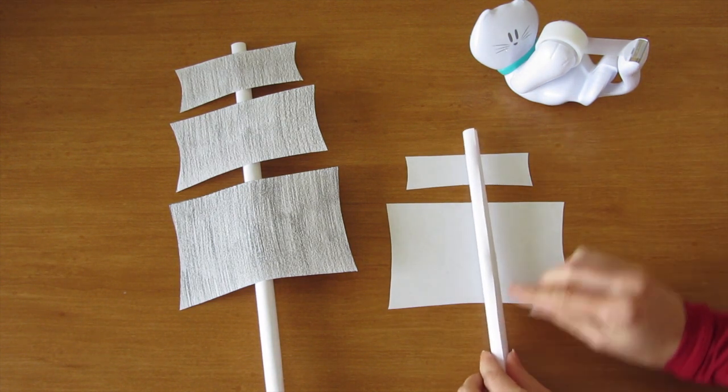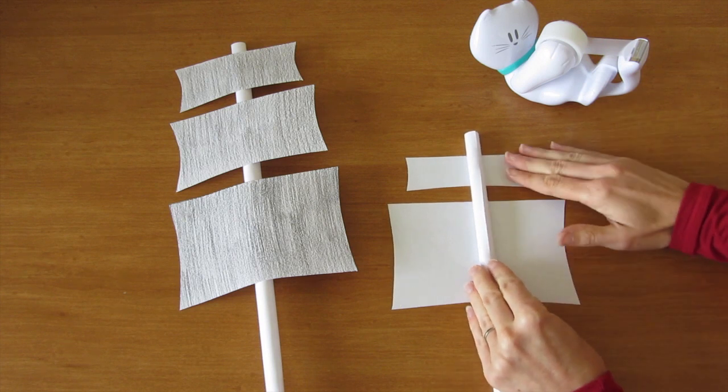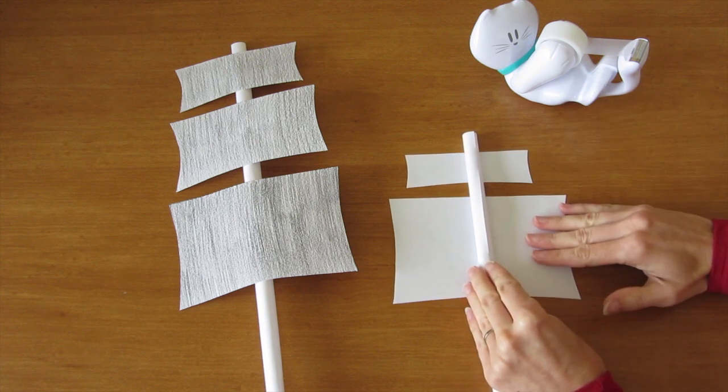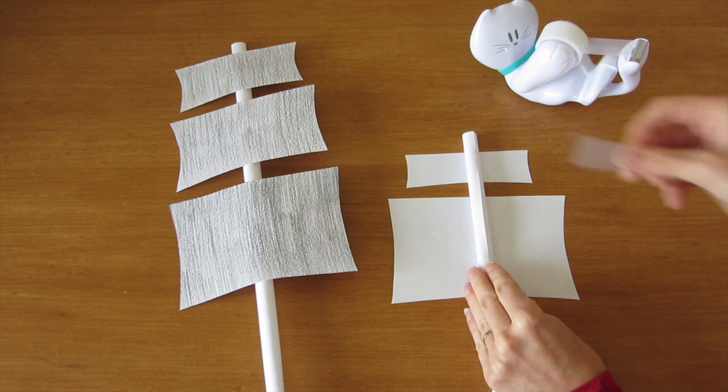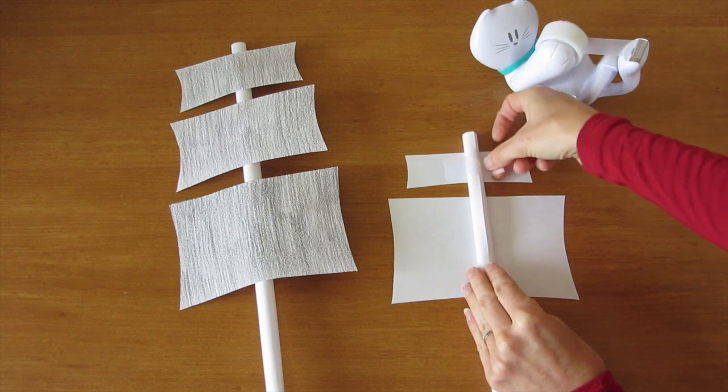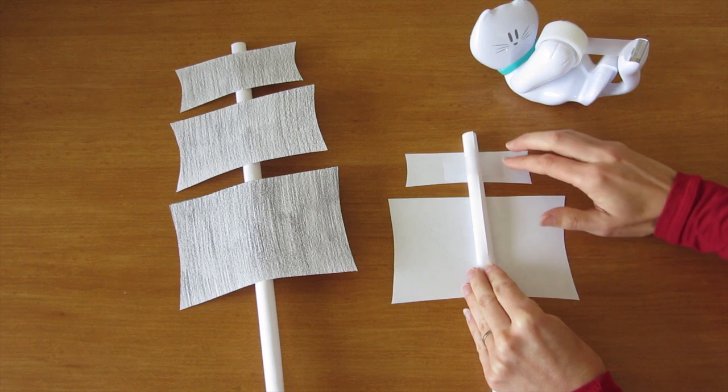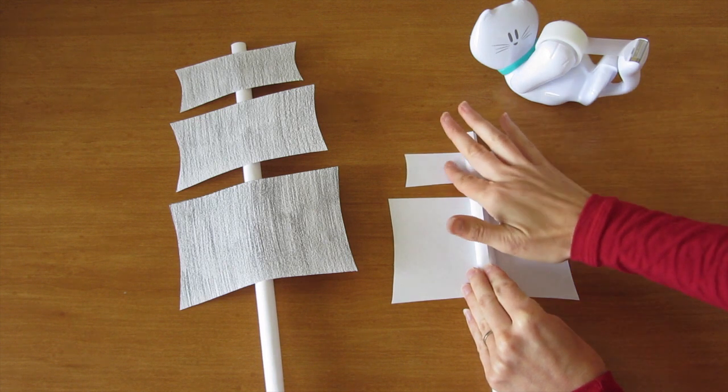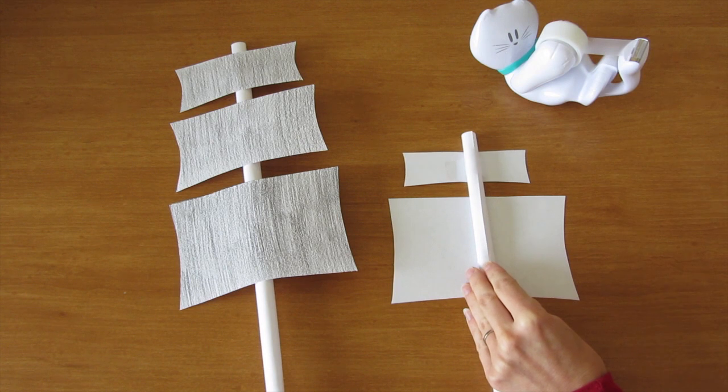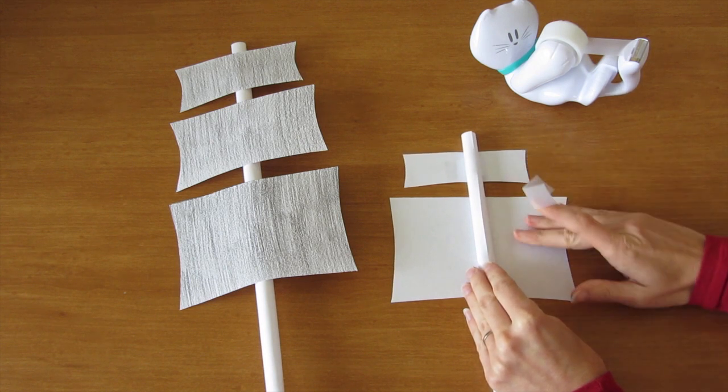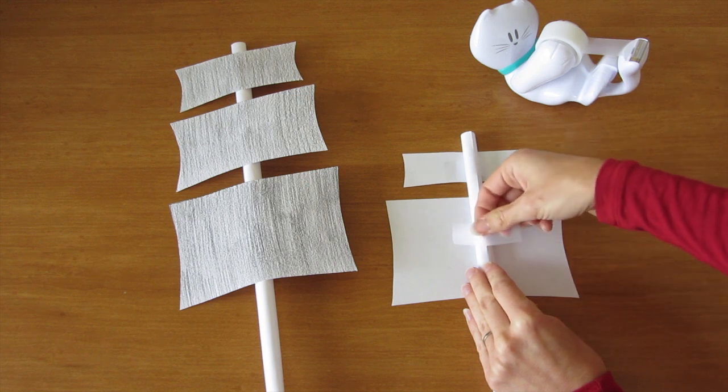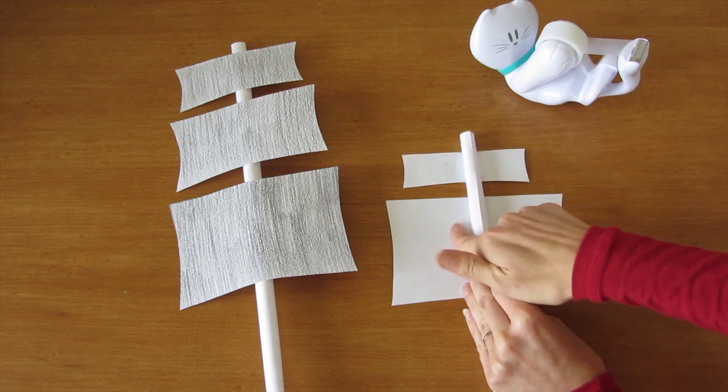Set your mast on top. Line your sails up where you'd like them to be. And then just put tape around the mast and press it down onto the sail. Make sure you put the sails kind of close together, so that when you put the ship together, the sails will show up above the actual size of this ship.